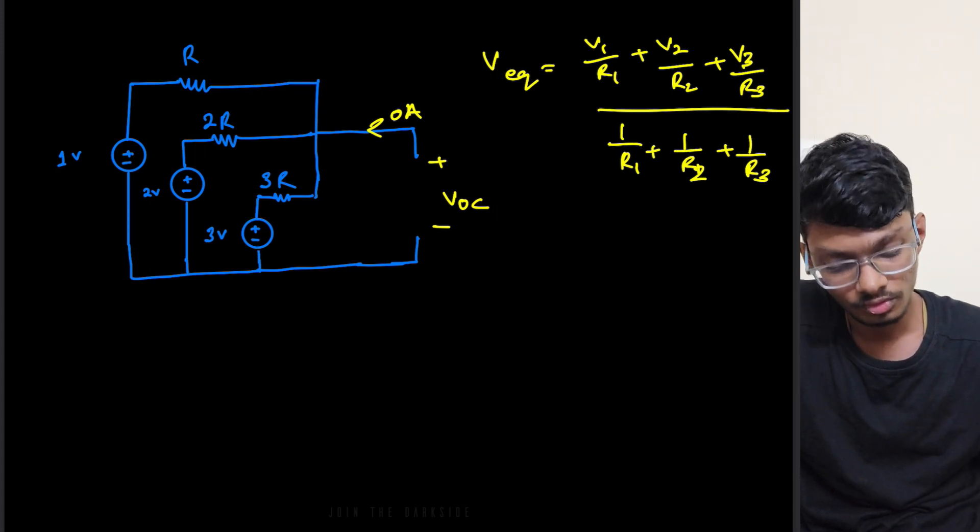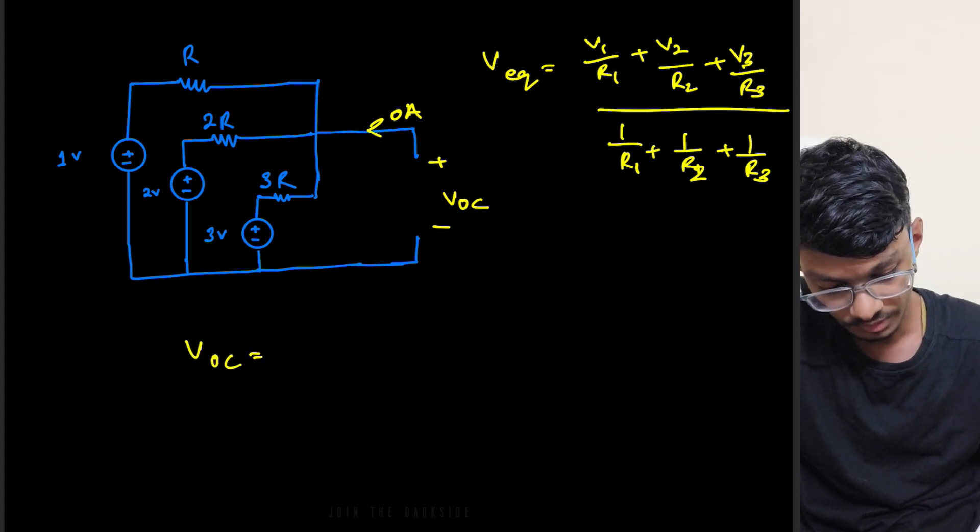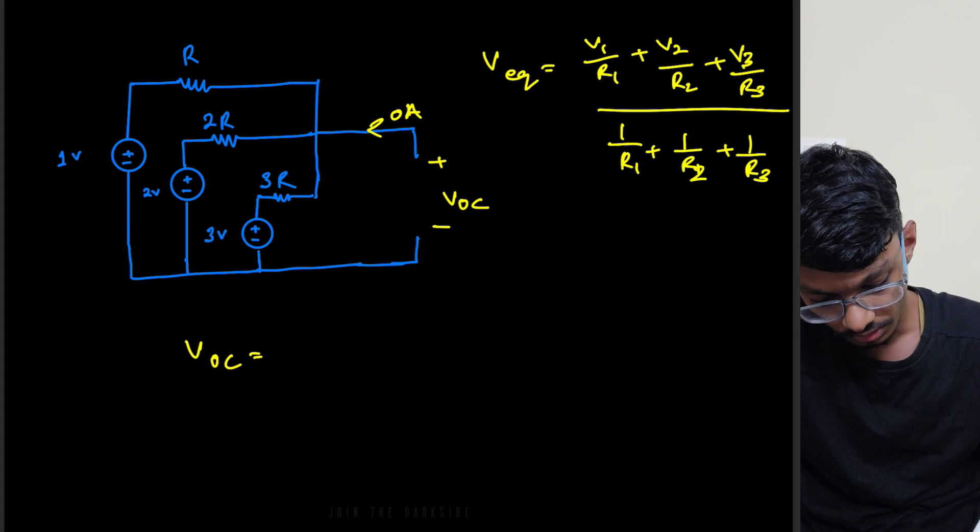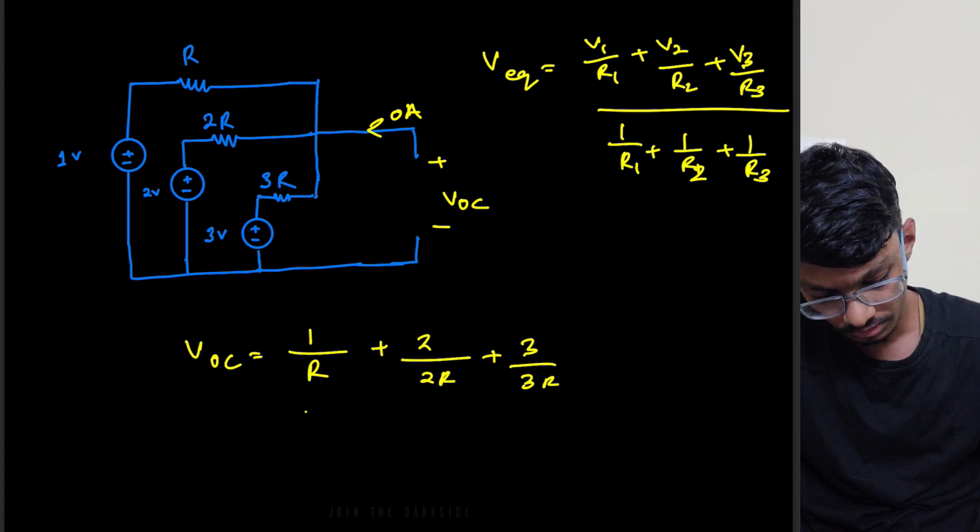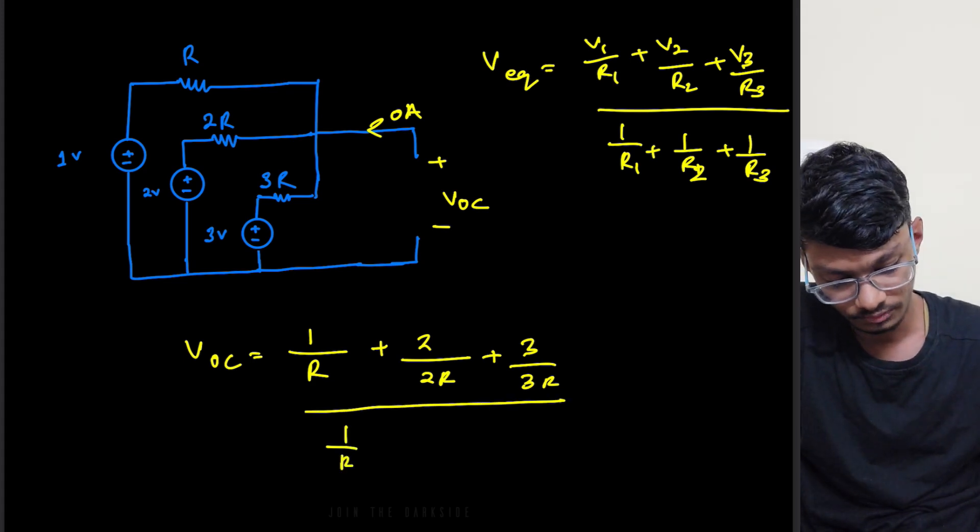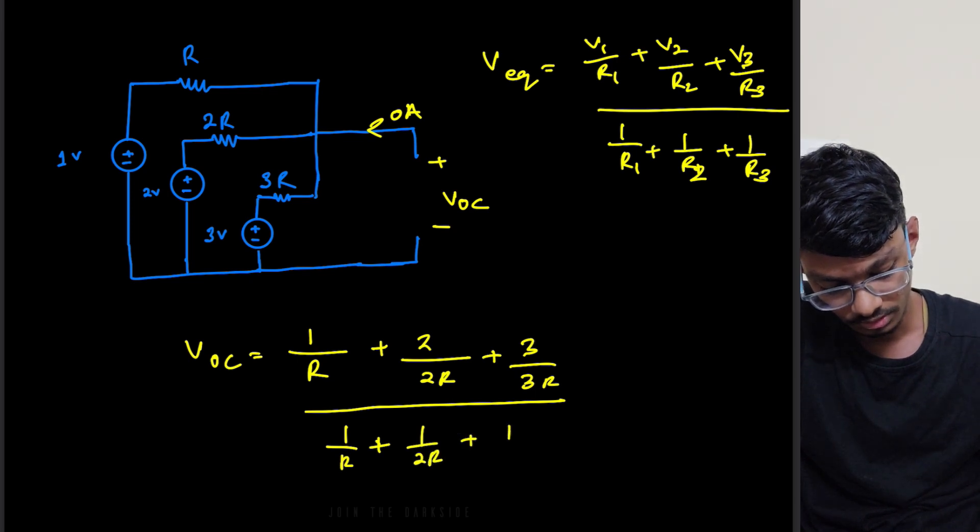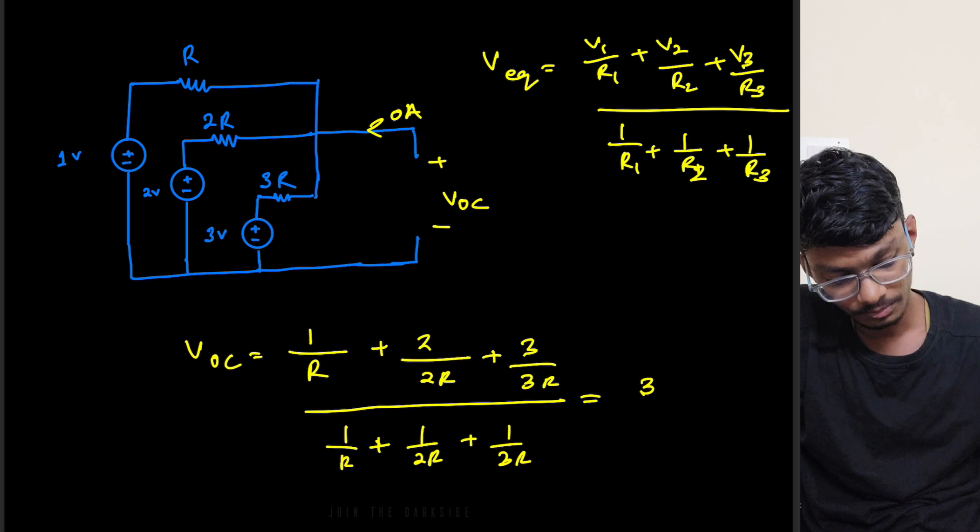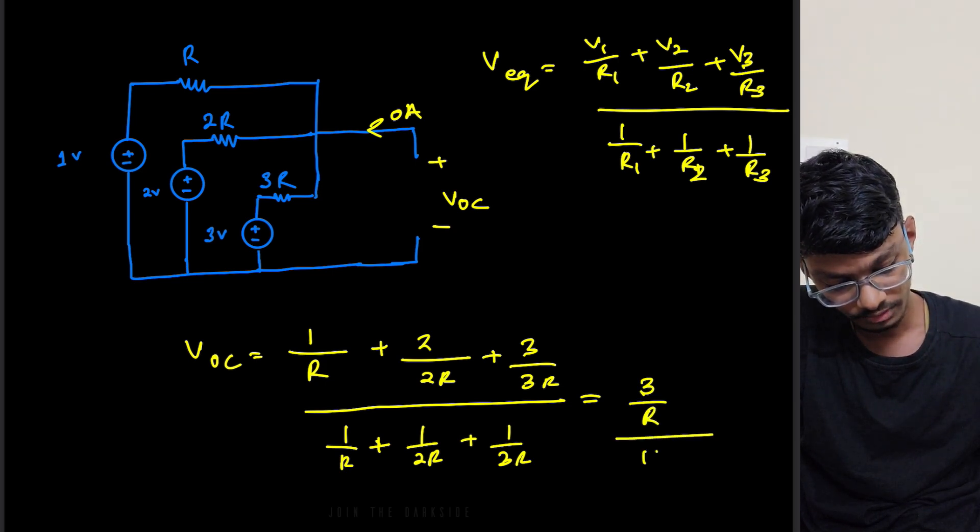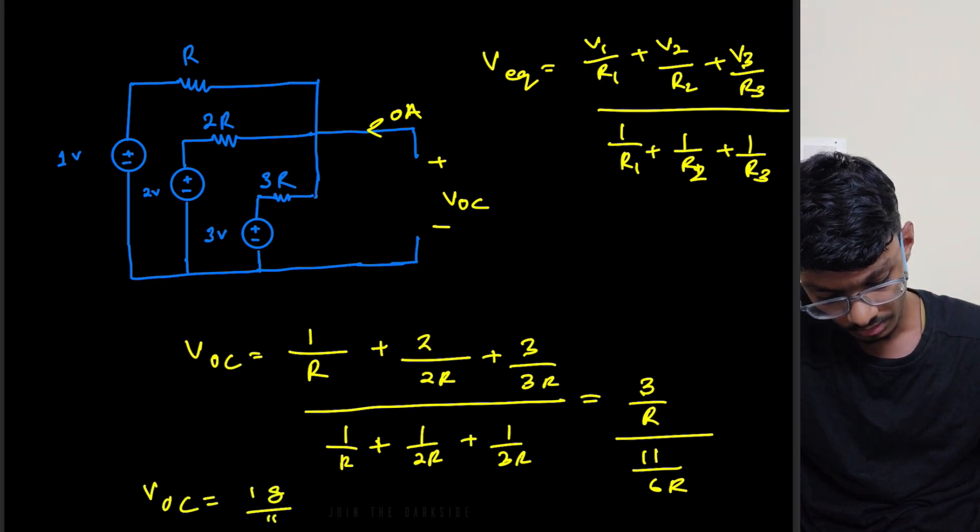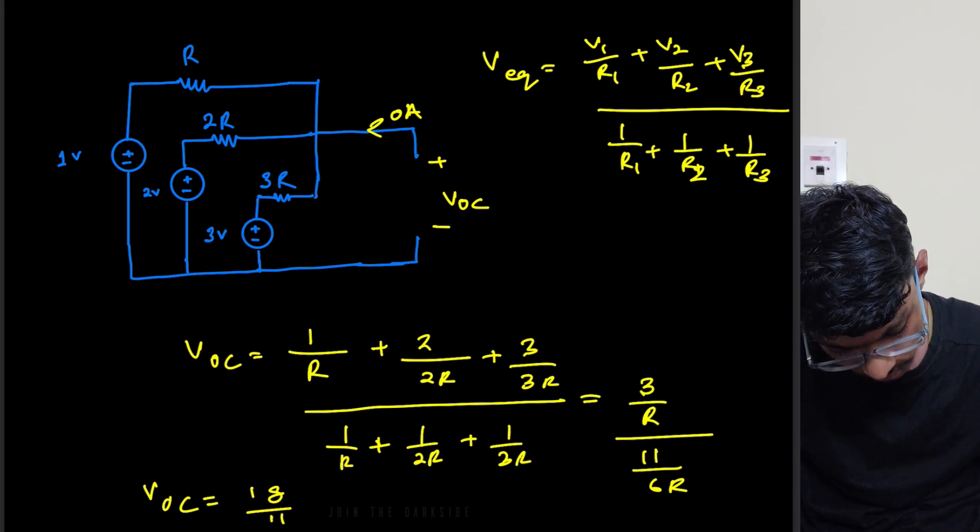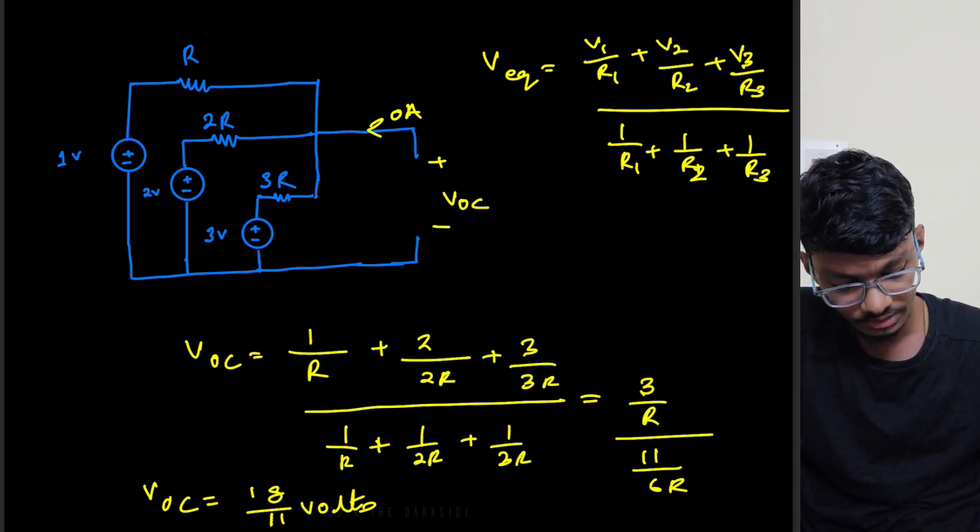So what is Voc? Voc is basically V1 by R1. Let's take V1 as 1 volt and R, then 2 volts by 2R plus 3 volts by 3R. So this is 1 by R plus 1 by 2R plus 1 by 3R. Here in the upper side we have 3 by R and in the bottom side we have 11 by 6R. So basically R cancels out. We are left with Voc equals to 18 by 11 volts.